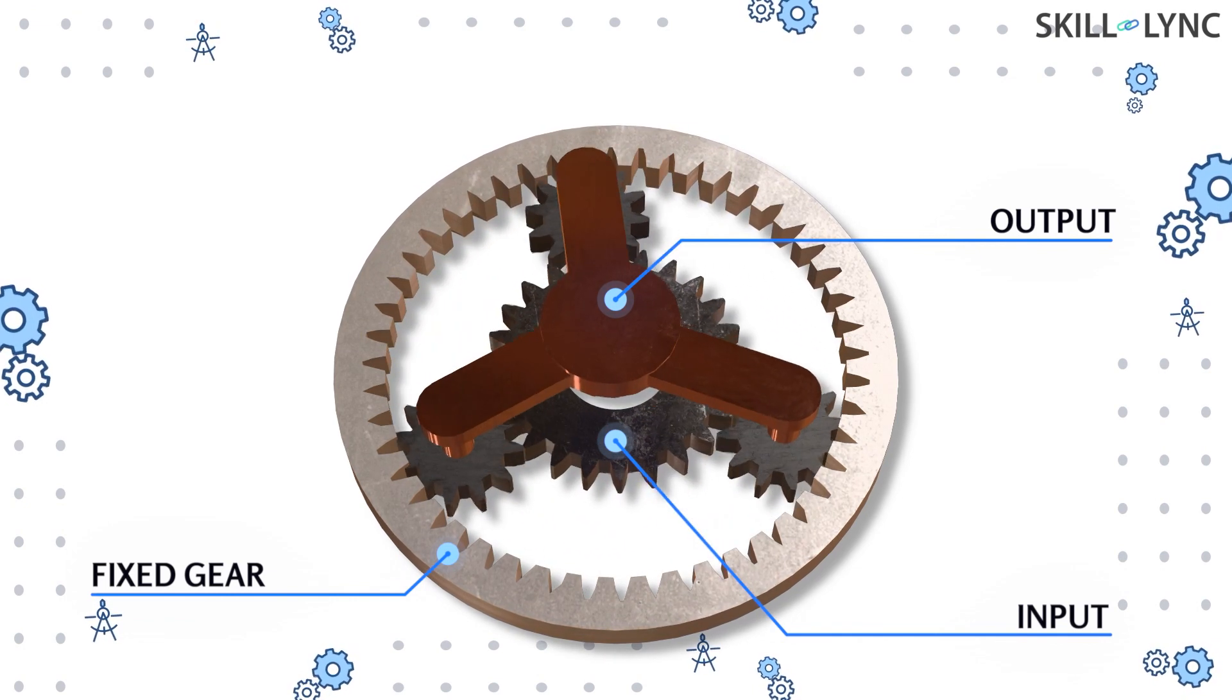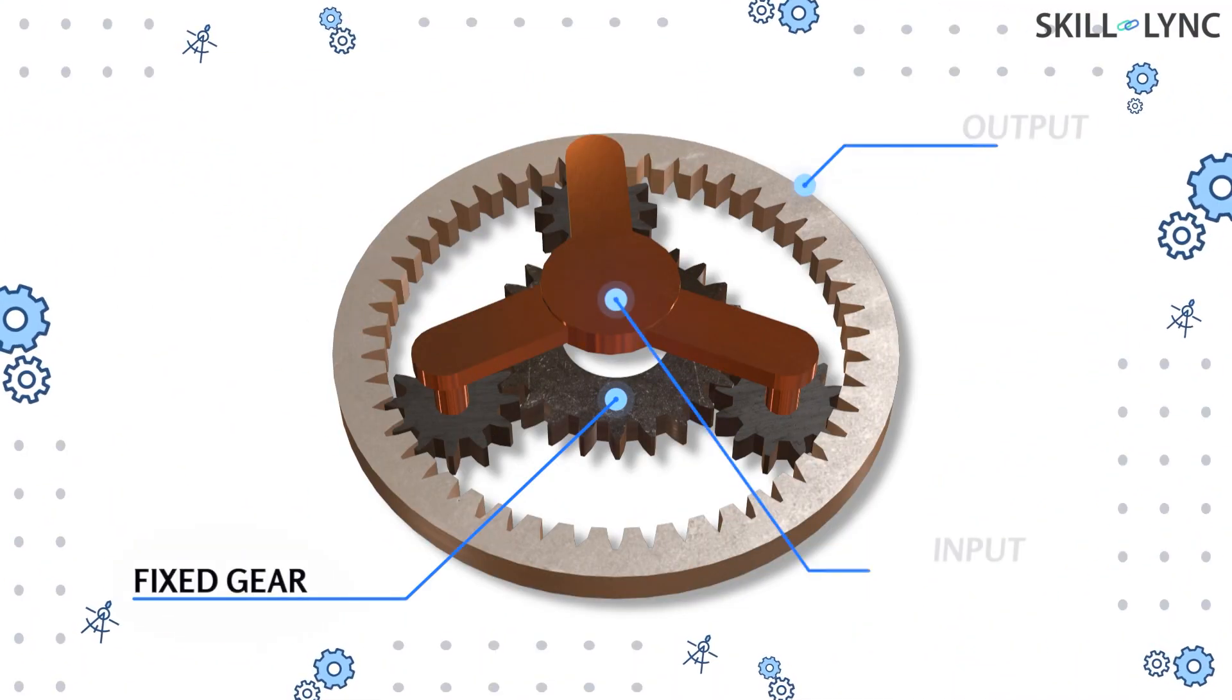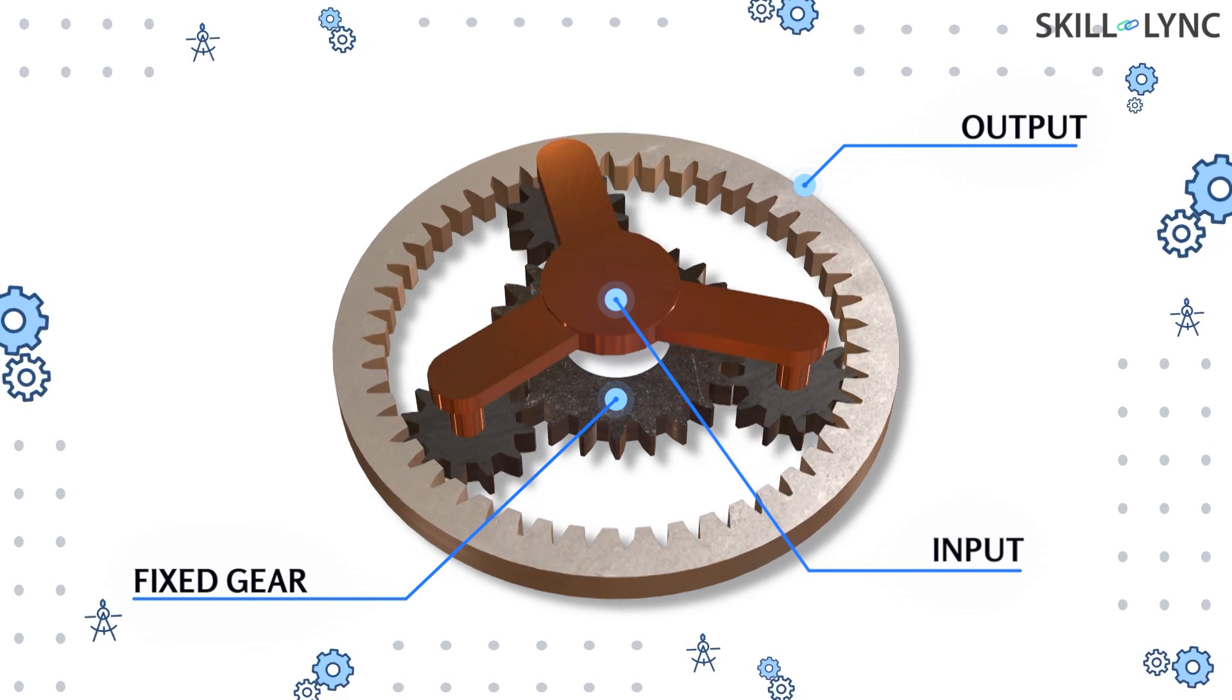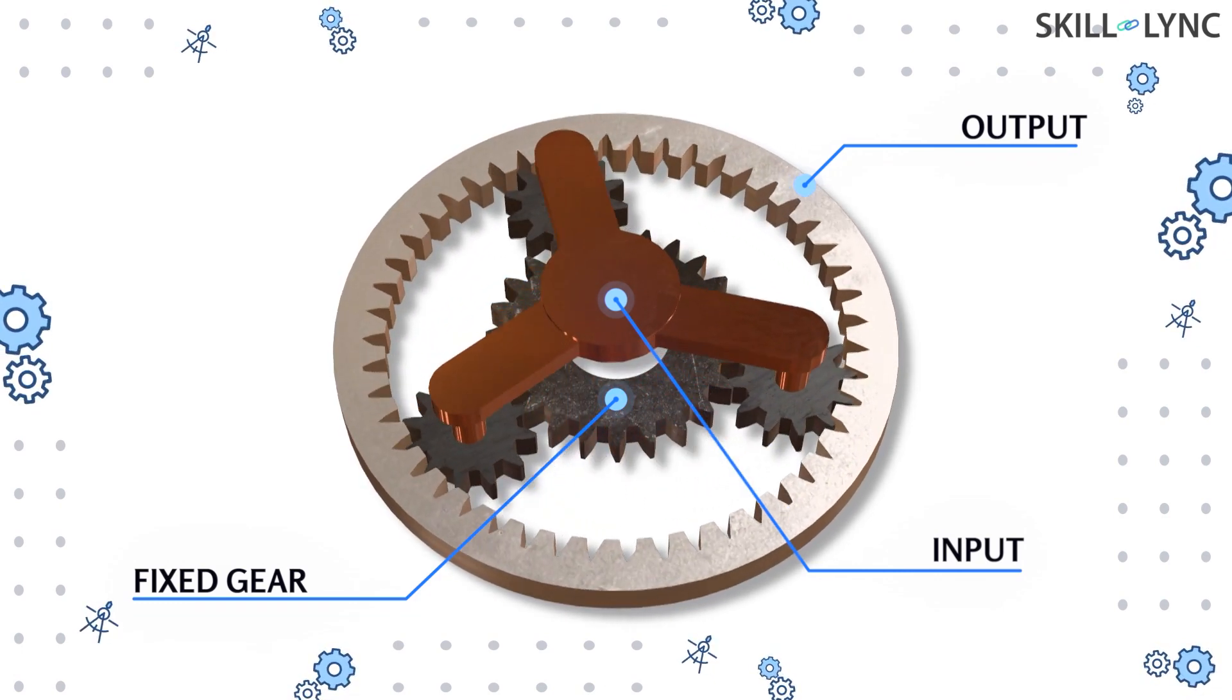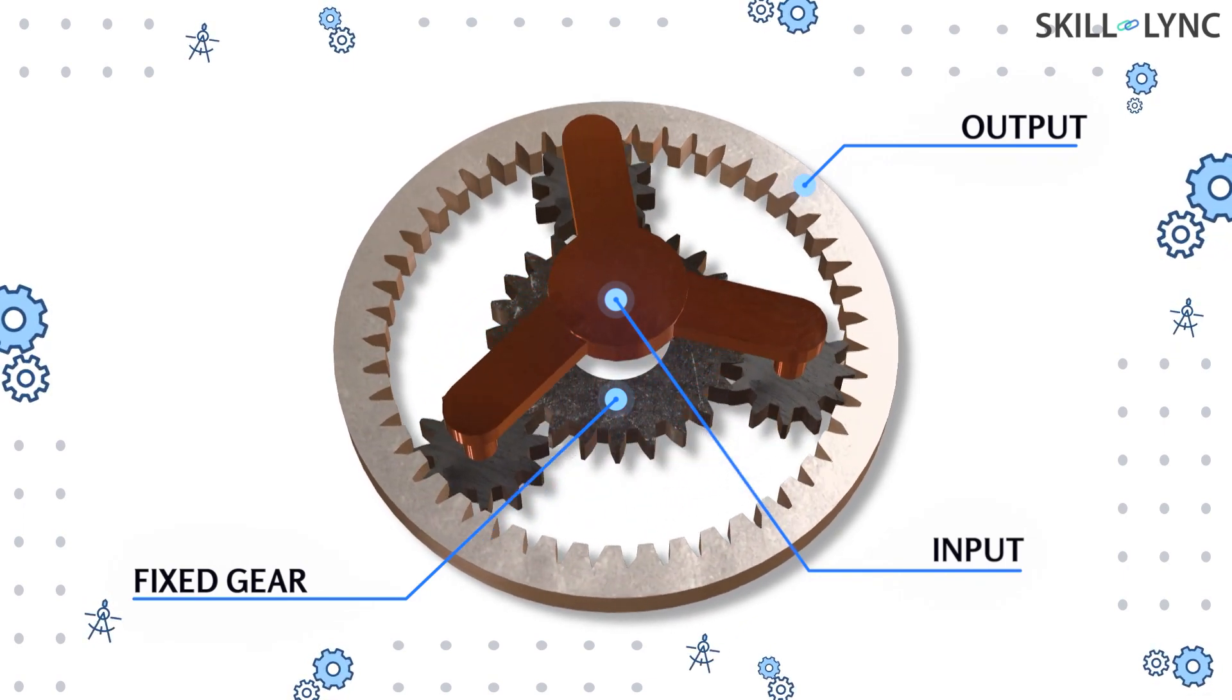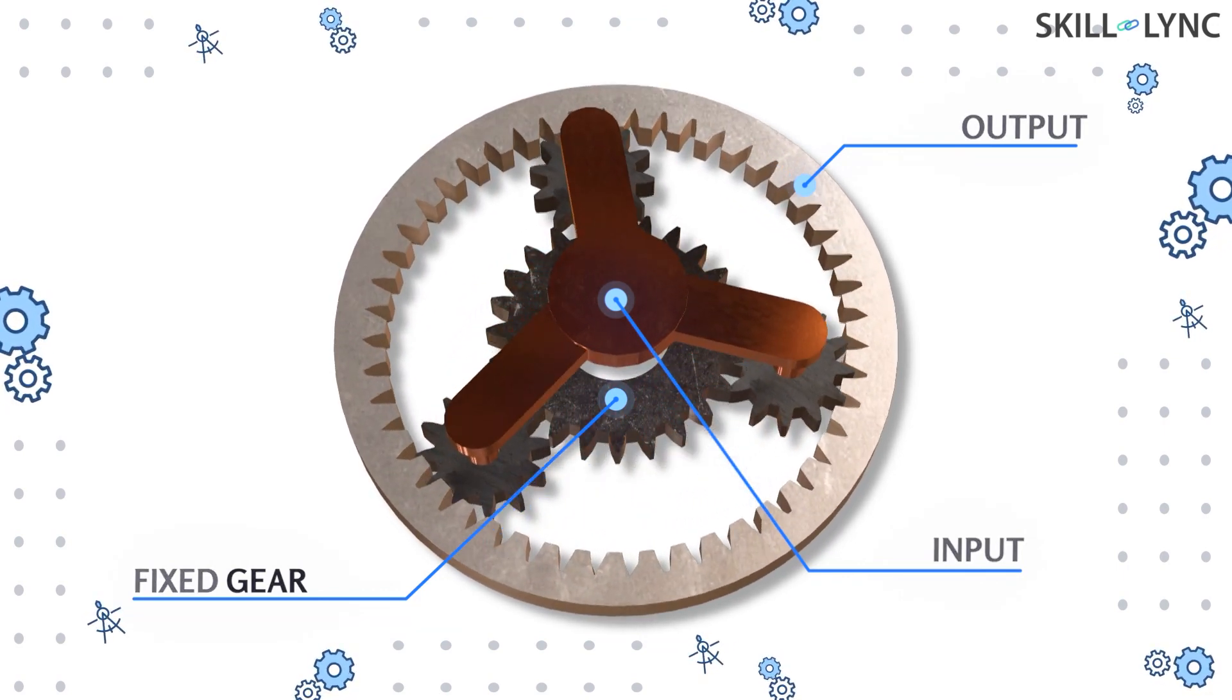When the sun gear is fixed and the input is given to the planet carriage, the ring gear serves as the driven member. When the carriage rotates, the planetary gears move over the sun gear and also mesh with the ring gear. At this time both the input and output will be in the same direction and the speed reduction will be lesser when compared to the previous stage.